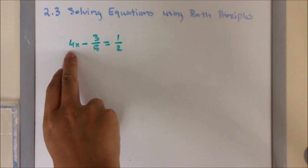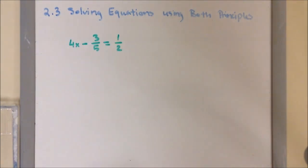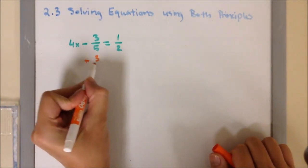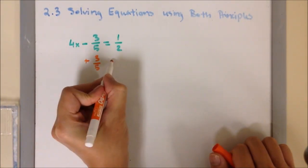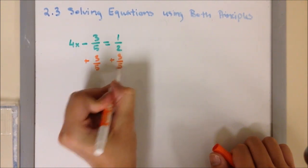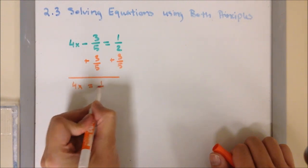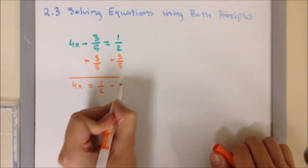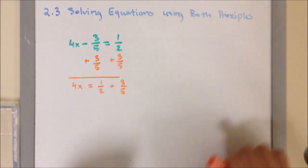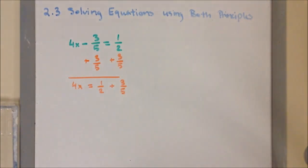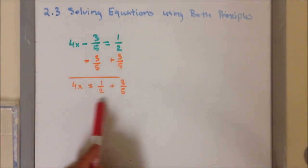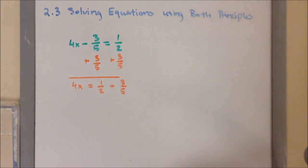Example 2: we have 4x minus 3/5 equals 1/2. Applying the addition principle, I want to add both sides by 3/5. So, 4x equals 1/2 plus 3/5. Again, I noticed that we don't have the same denominator, so we must find a common denominator before we can add or subtract fractions.